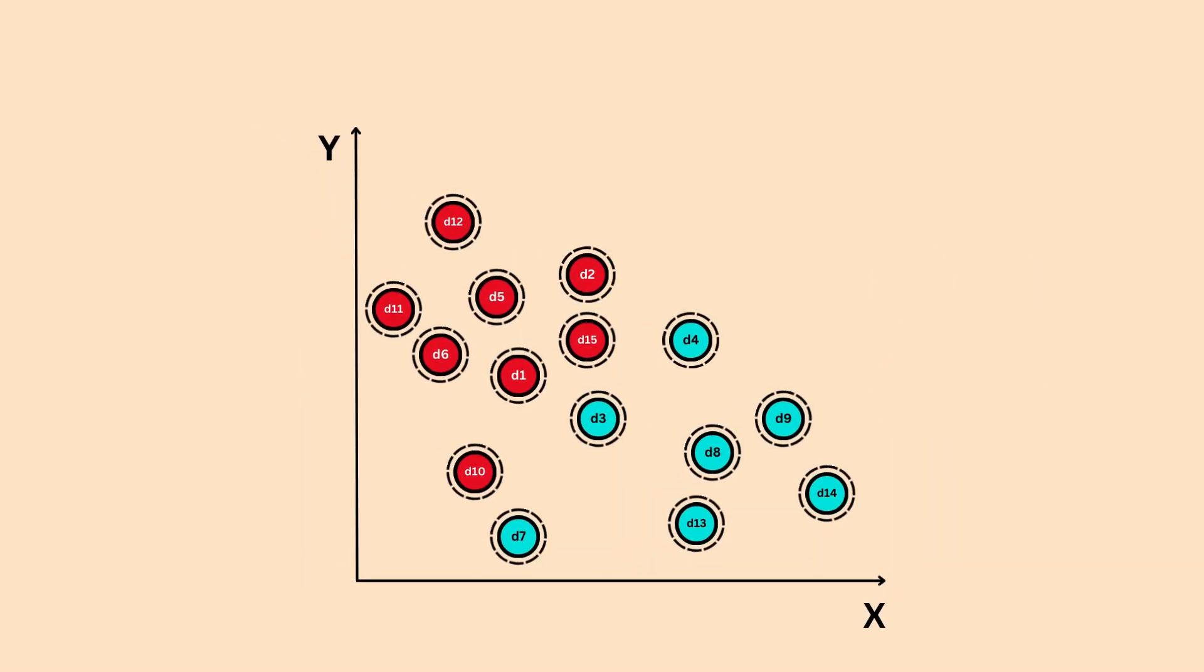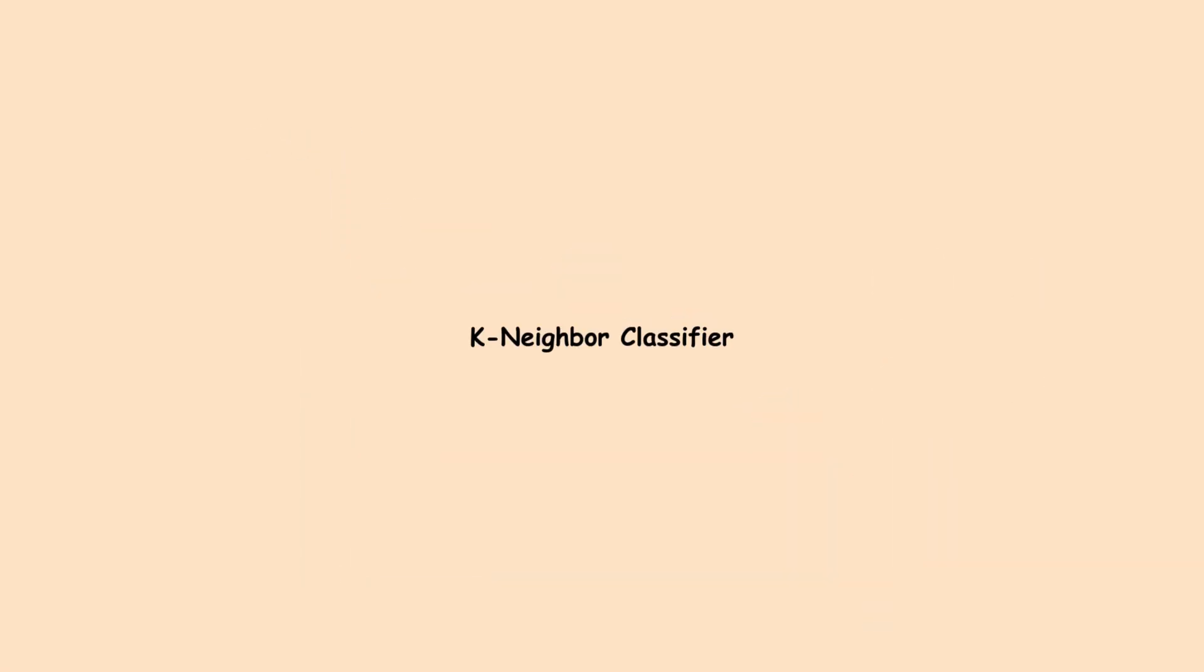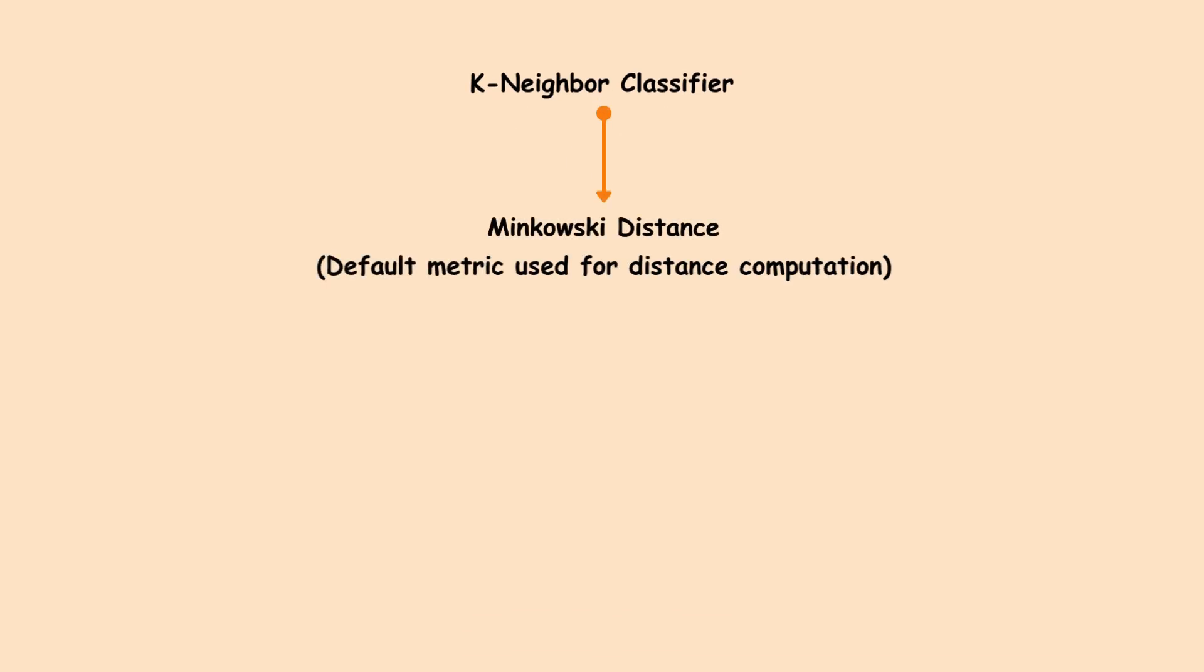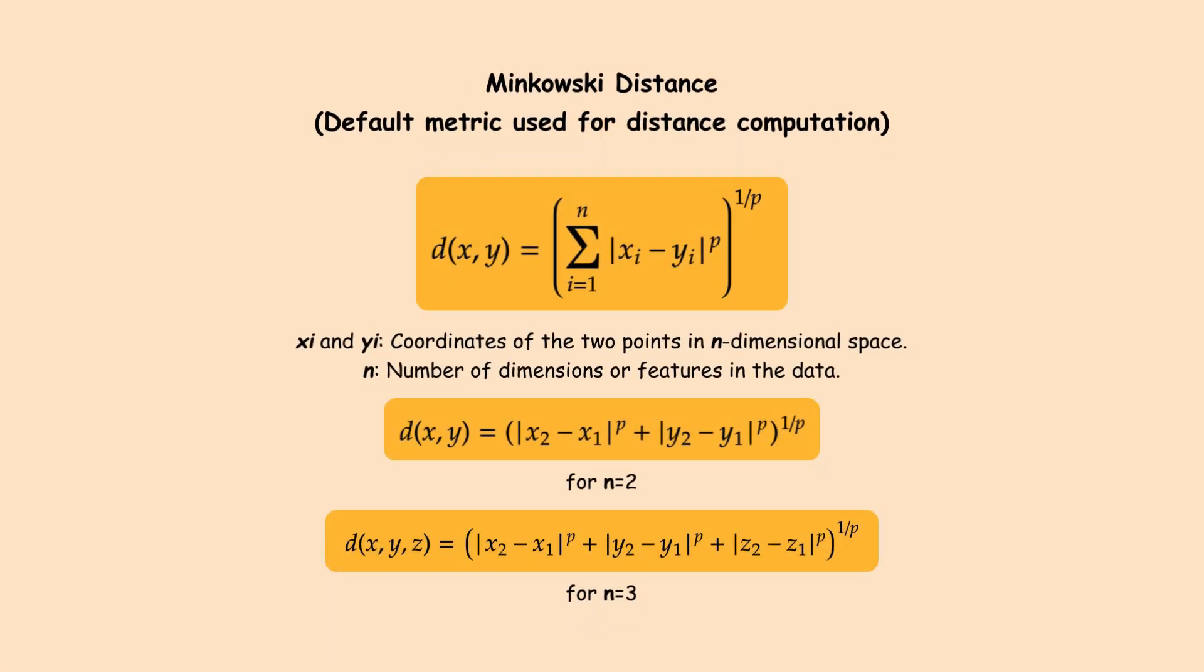Simple, right? But how do we calculate those distances? The K-neighbor classifier uses a metric called the Minkowski distance, which is a flexible and generalized way to calculate distances. The formula looks like this. Here, the parameter P controls the type of distance. Let me show you what that means.